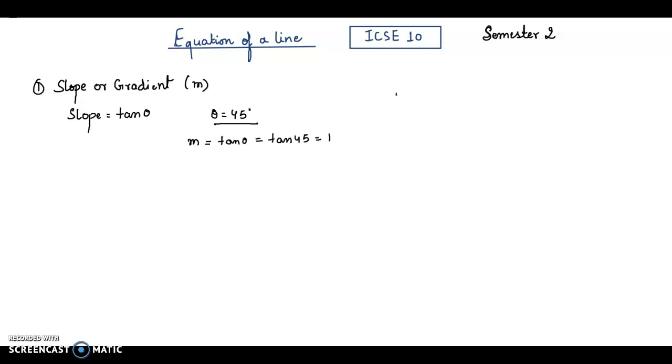I will just tell you for tan θ. The values are 0°, 30°, 45°, 60°, and 90°. This is 0, 1/√3, 1, √3, and then infinity.